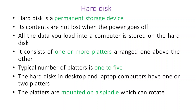Hard disk is a permanent, non-volatile storage device — its contents are not lost when the power goes off. All data loaded into the computer is stored on the hard disk. When you want to execute programs, the content from the hard disk is transferred into RAM. A hard disk can be imagined as a collection of platters placed one above the other, similar to CDs stacked on top of each other.